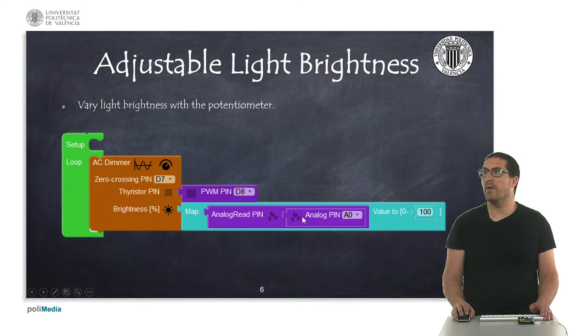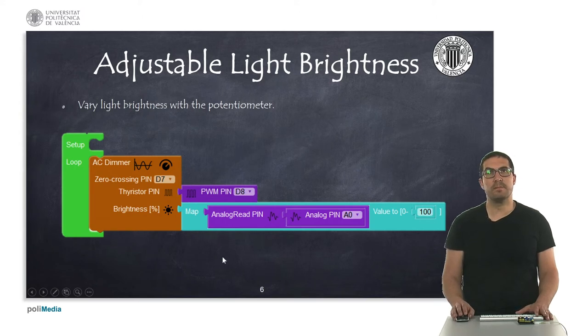It's a scaling or a linear scaling between the raw measurement of the potentiometer and this is mapped onto values from 0 to 100, so this corresponds to the brightness. And with that we will regulate the light intensity.